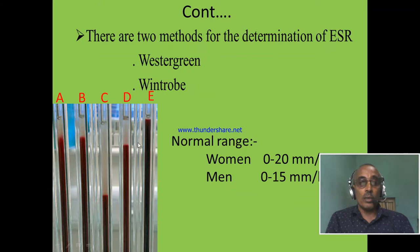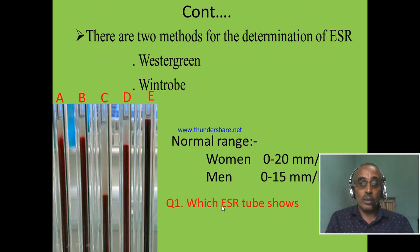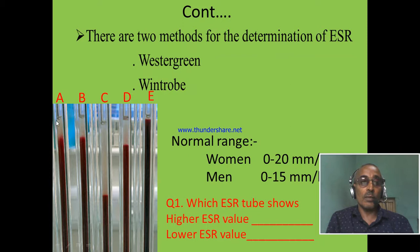Normal value: For men, 0 to 15 millimeters per hour; for women, 0 to 20 millimeters per hour — these are the normal ranges of ESR. Here I have one easy question about ESR: Which ESR tube shows the higher ESR value and which shows the lower ESR value? You can select your answer from these five tubes.